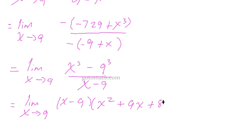And it's all over x minus 9. Now we can cancel out some like factors here.